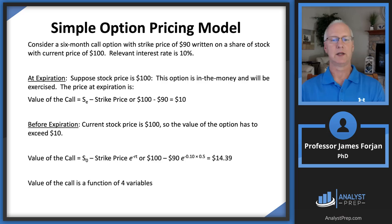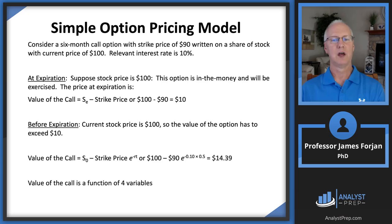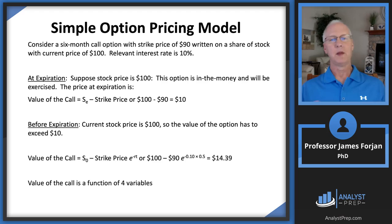So 100 minus the present value of 90 gives us $14.39. In this simple option pricing model, the value of the call is a function of those four variables. If I write this six-month option for you, I'll charge $10 for intrinsic value and $4.39 for time value — a total of $14.39 today. You don't break even unless the stock price rises to $104.39. The important part is that this simple model gives a reasonable estimate of call value based on those four variables.